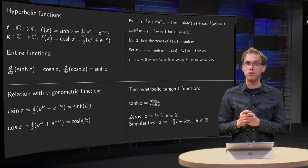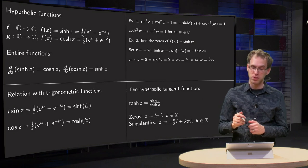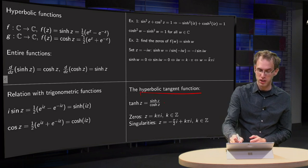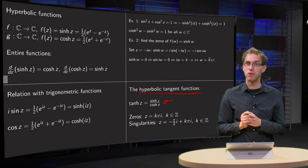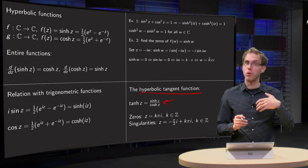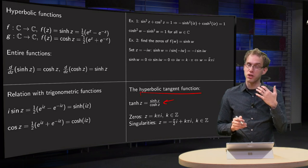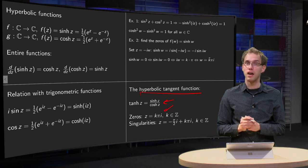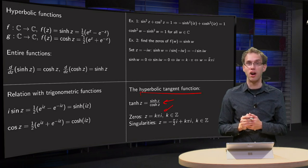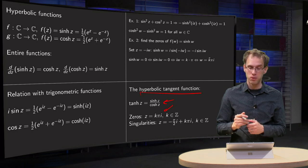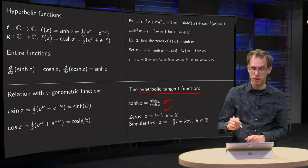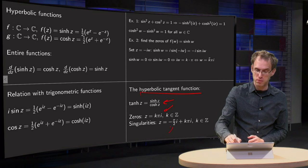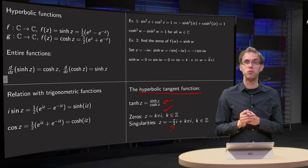We can use this to find some information about the hyperbolic tangent function: hyperbolic tangent equals sine hyperbolic z divided by cosine hyperbolic of z. It's zero when the numerator is zero, so the zeros are the same as the zeros of the sine hyperbolic: k·π·i. The singularities are wherever you are dividing by zero — those are the zeros of the cosine hyperbolic, and similarly to the sine hyperbolic you can find them as minus π·i/2 plus k·π·i.